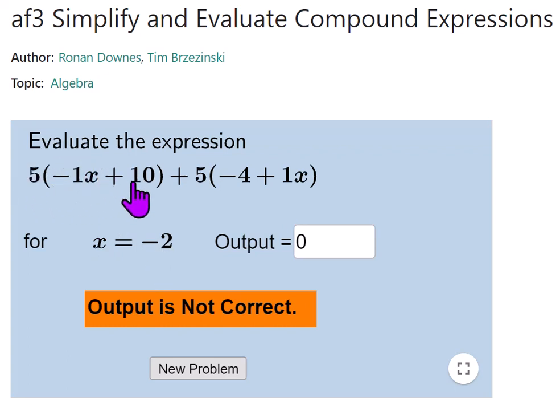I have 5 times 12 is 60, and then I have minus 30. So the answer is 30.